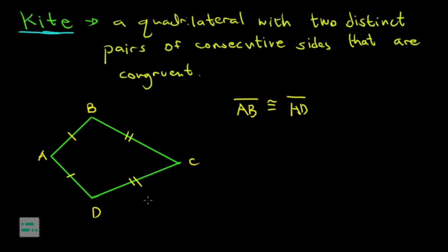Si BC side BC na congruent naman kay DC. AB and AD are consecutive sides, and then BC and DC naman ay consecutive sides din. Meron mga particular na angle tayo na dapat pangalanan: si angle A at si angle C. Ang tinatawag natin ay vertex angles.